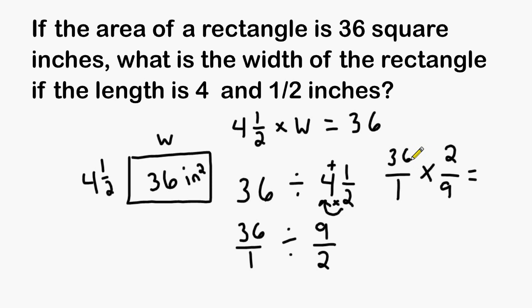And then we can simply take the numerators and multiply those together. 36 times 2 is 72, and our denominators have a product of 9.